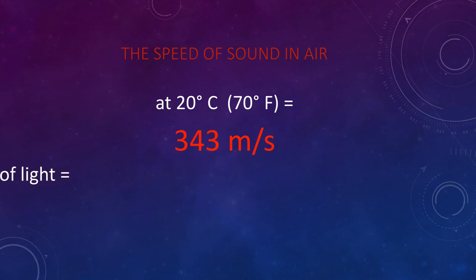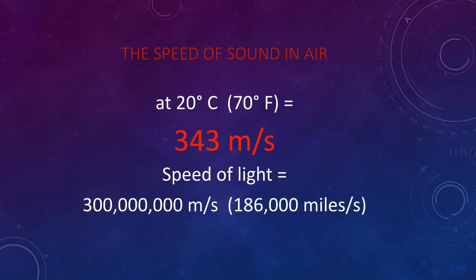The speed of sound in air at 20 degrees Celsius, or 70 degrees Fahrenheit, is 343 meters per second. That's about 1,130 feet per second, or about a fifth of a mile per second. Although that's fast, it's not instantaneous. To compare, light travels at 300 million meters per second, or 186,000 miles per second. Now that's fast.